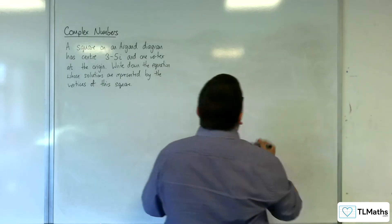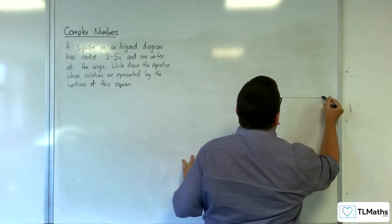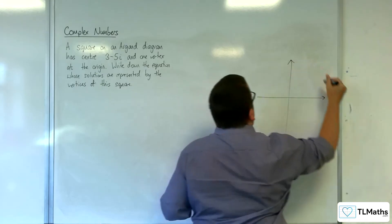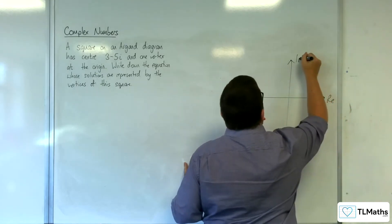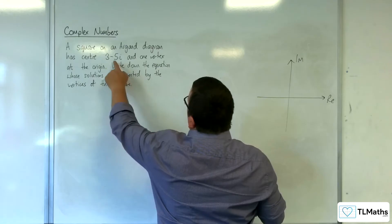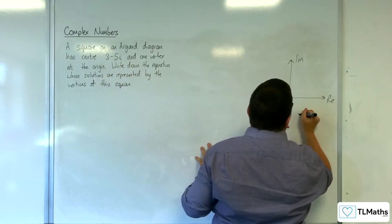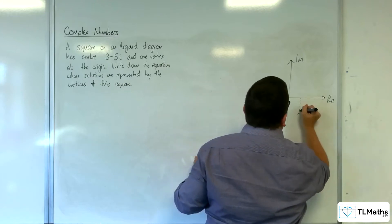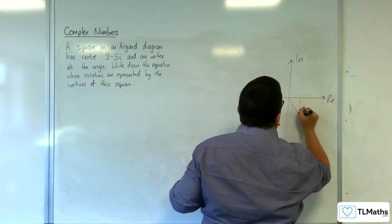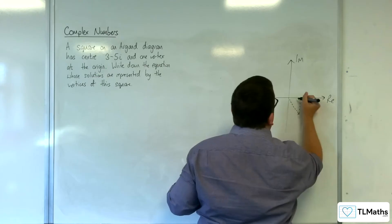So let's draw a diagram so we can visualize what's going on. Here's my real axis and imaginary axis. It's a square centered at 3 - 5i, so somewhere down here. That's a right angle, that's 3, that's 5.